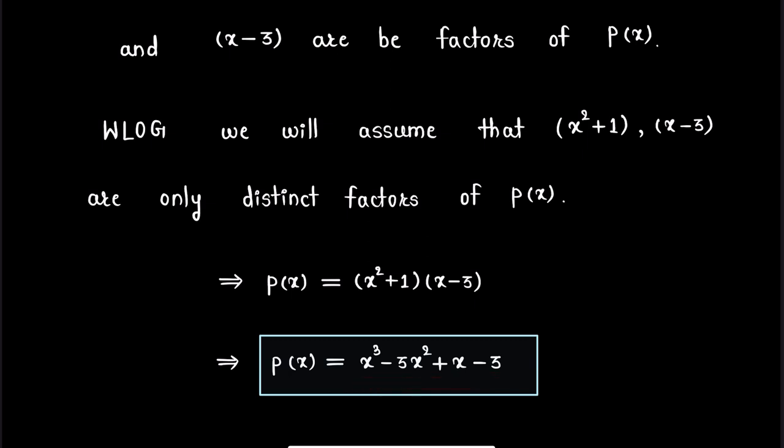So P(x) = x³ - 3x² + x - 3 is the required polynomial with rational coefficients whose roots are 3 and iota. And this completes our solution.